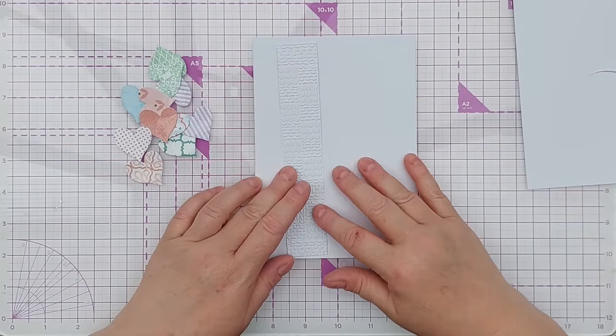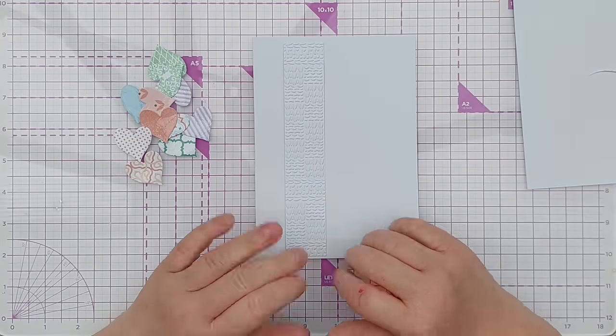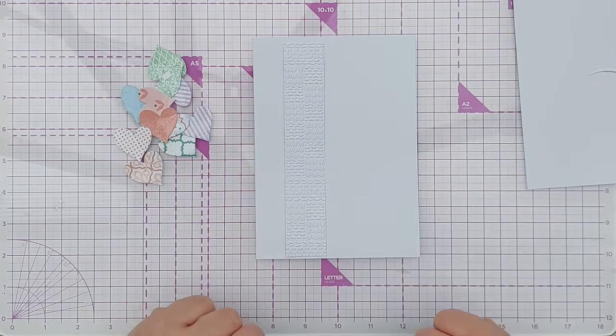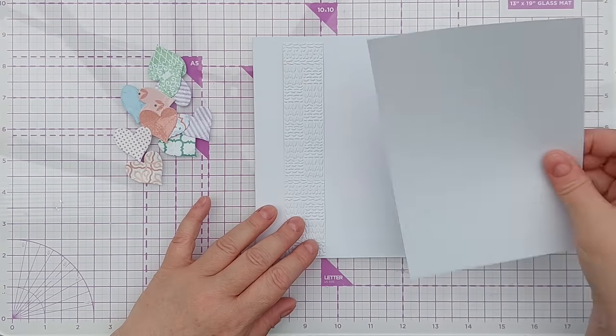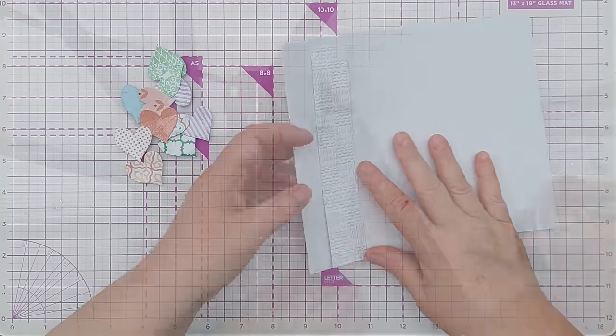So I've cut out two rows, which is about right, I think, for this card. Leave some nice white space here. But before I stick it down, I'm going to mount it on another piece of cardstock and give it a little border.